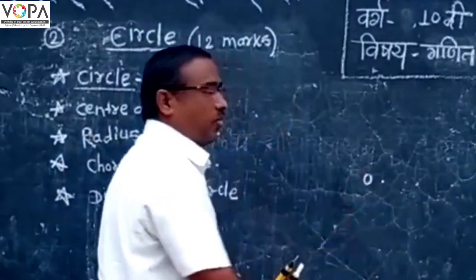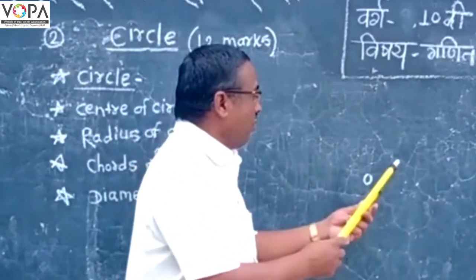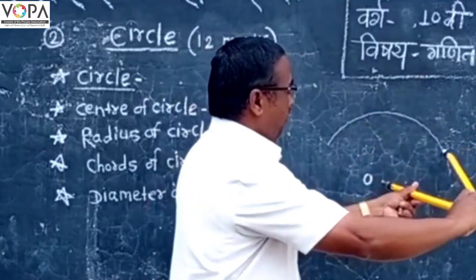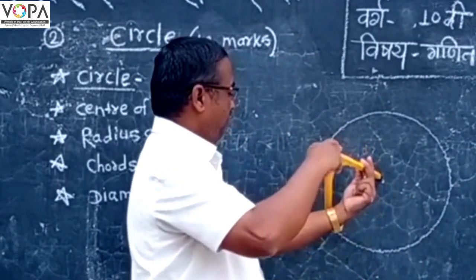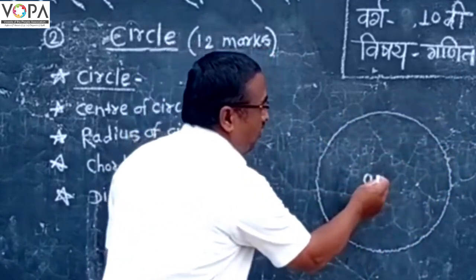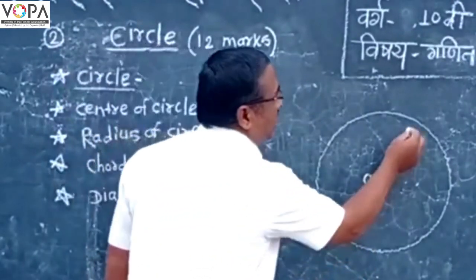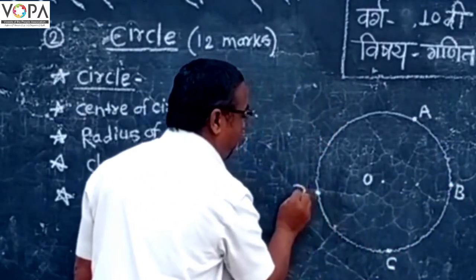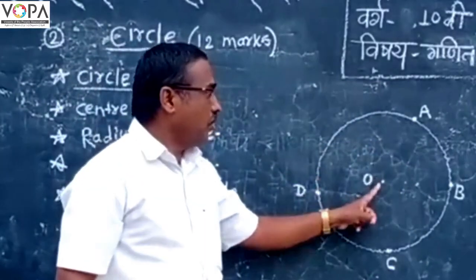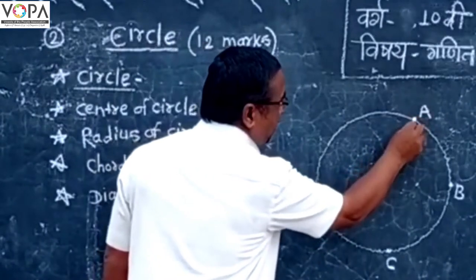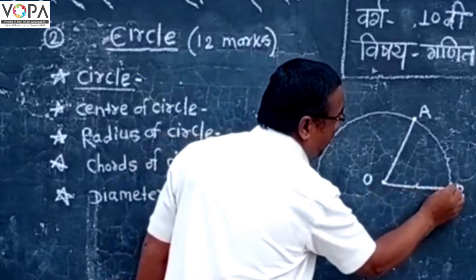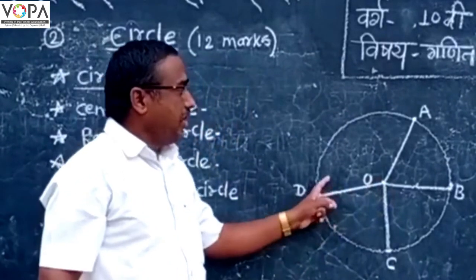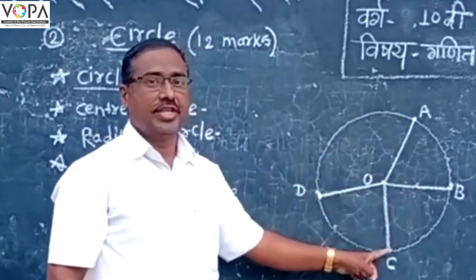This is a fixed point O in a plane. The set of all points which are equidistant from O — point A, point B, point C, point D are equidistant from point O. That is, segment OA, segment OB, segment OC, and segment OD are equidistant from point O. Such a figure is said to be a circle.